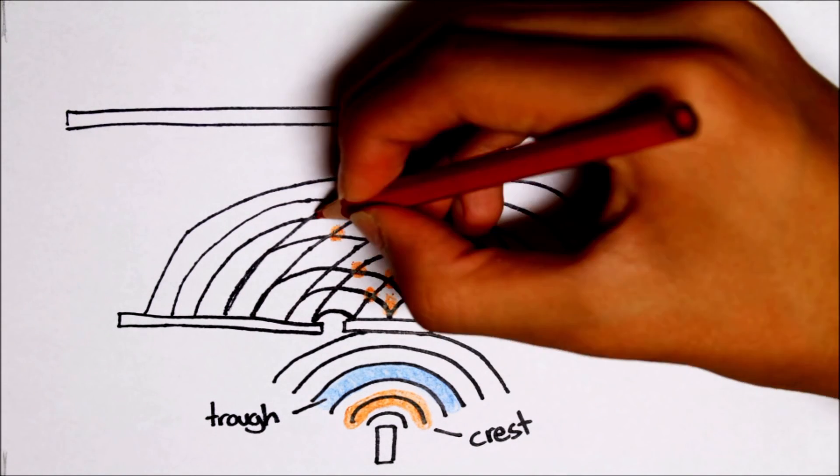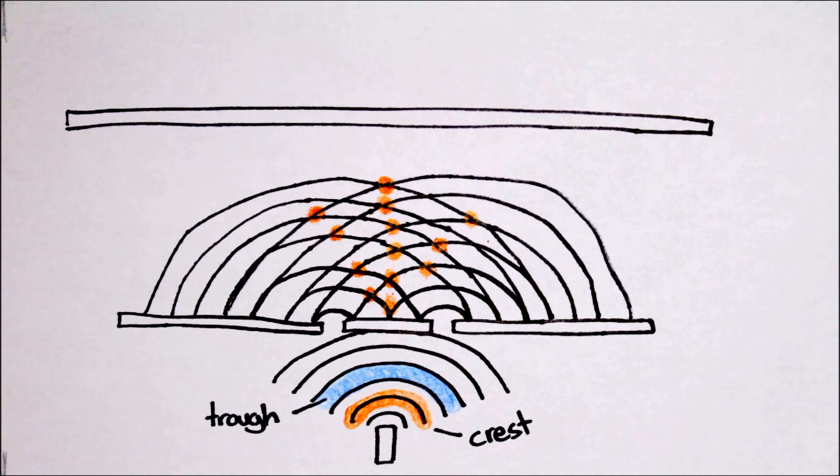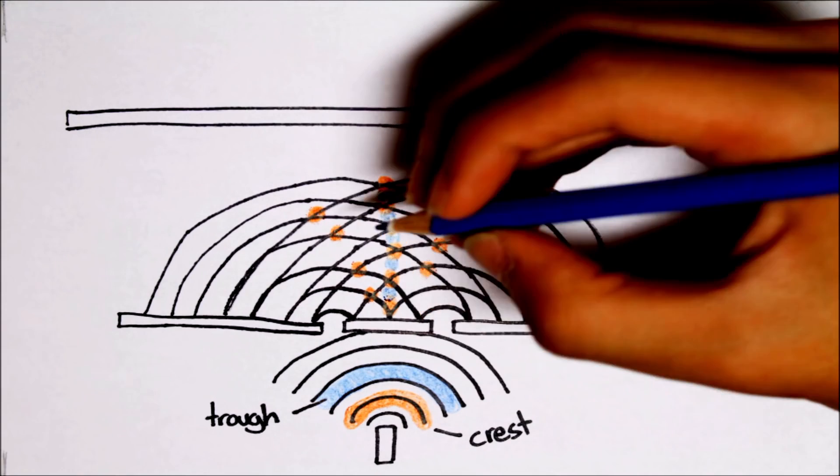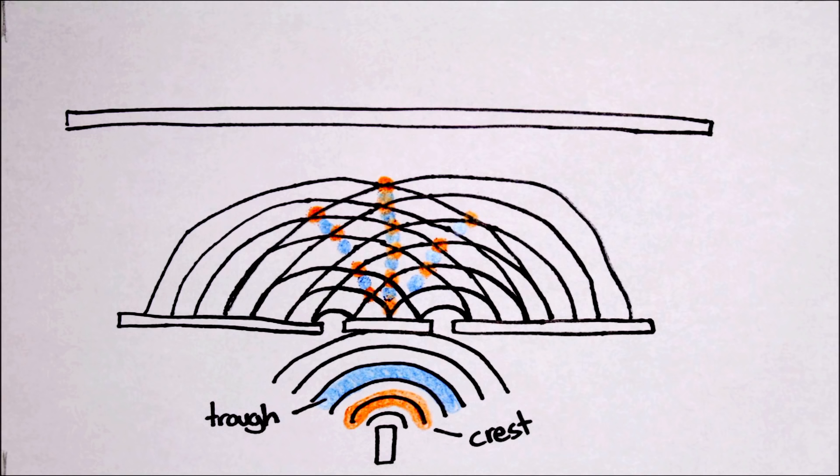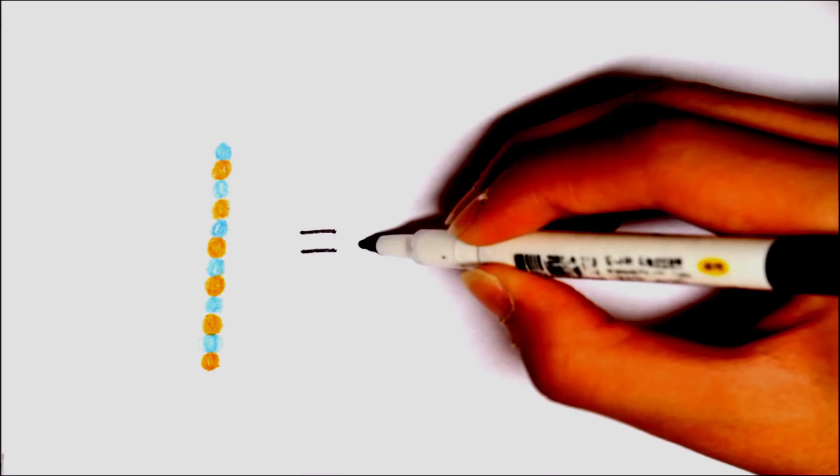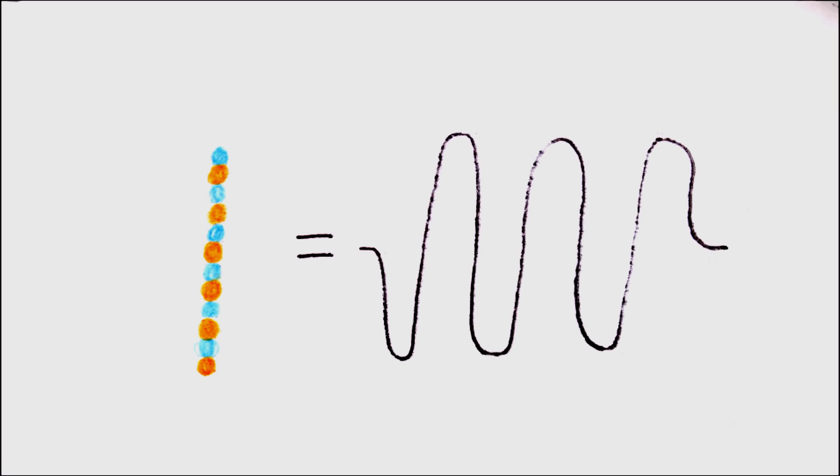If you look close enough, these points are where two crests overlap, creating a bigger crest. These points here are where two troughs meet, creating a bigger trough. The combination of a big crest and a big trough create a wave with high amplitude. This is called constructive interference.